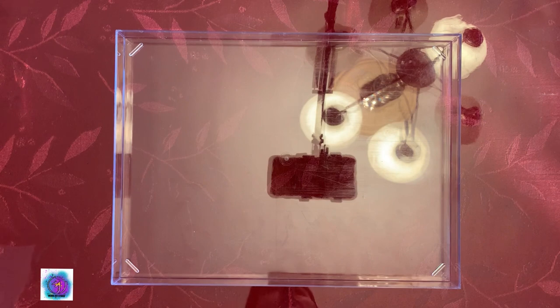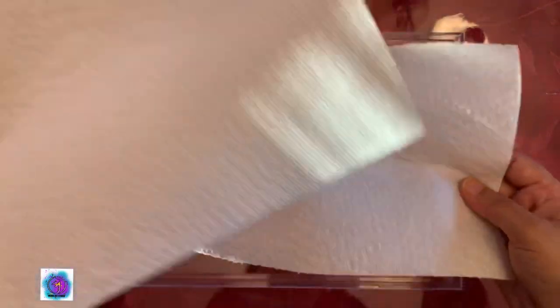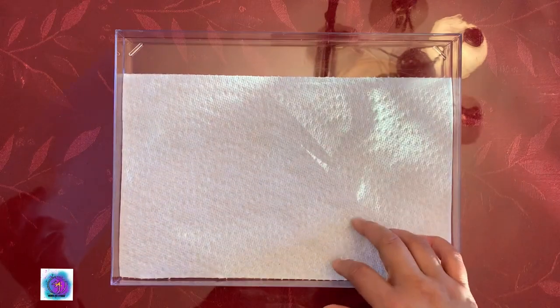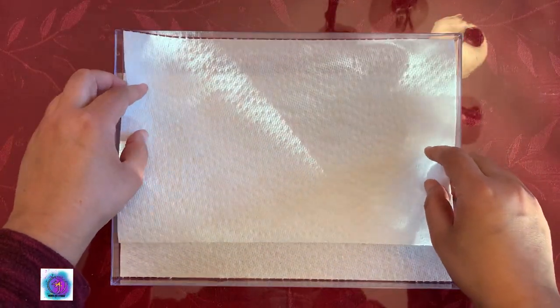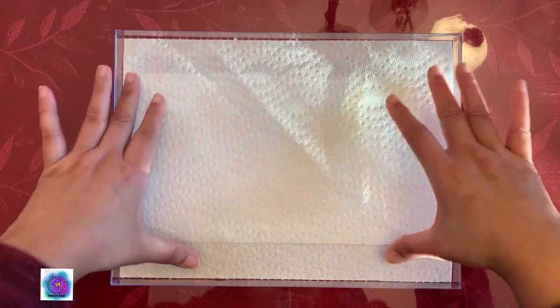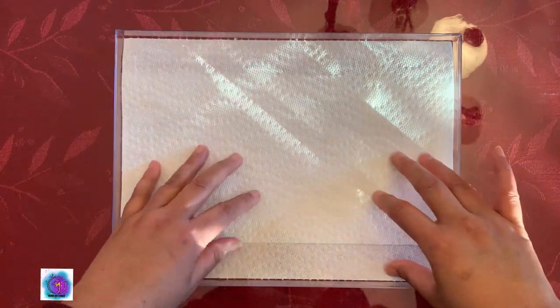Next, in the open box we need to add kitchen paper napkins. Two sheets is good, whatever fits your box. Adjust it or you can cut it to size depending on which box you're using. Usually two sheets is good enough.